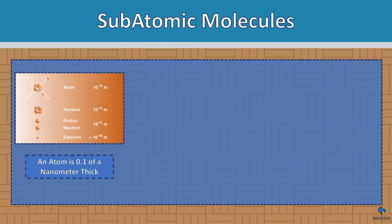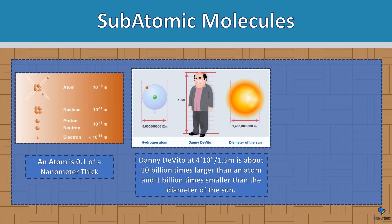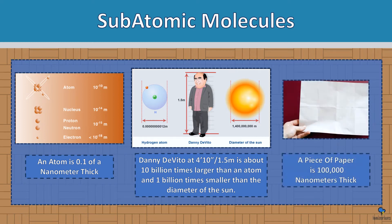First, we have to talk about subatomic molecules. An atom is a tenth of a nanometer thick. Danny DeVito at 4 feet 10 inches tall is about 10 billion times larger than an atom and 1 billion times smaller than the diameter of the sun. A piece of paper is 100,000 nanometers thick.